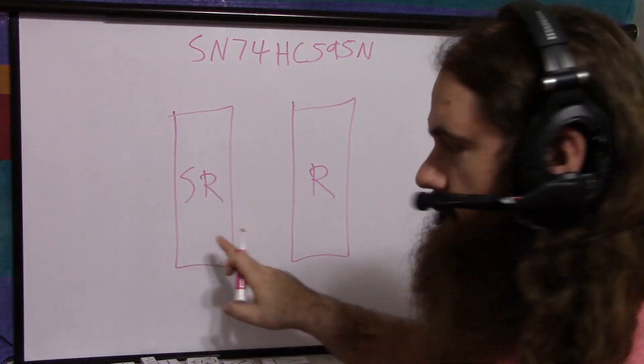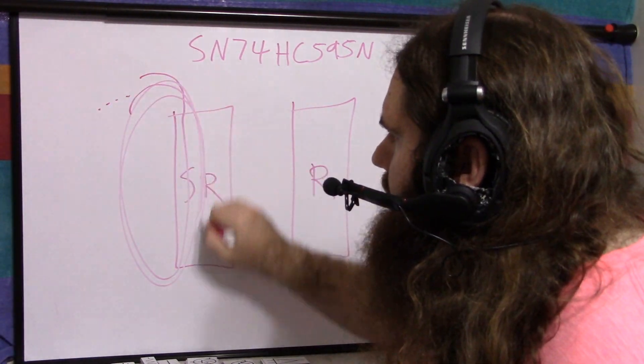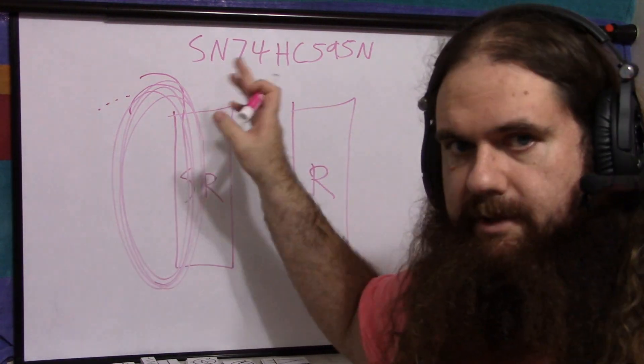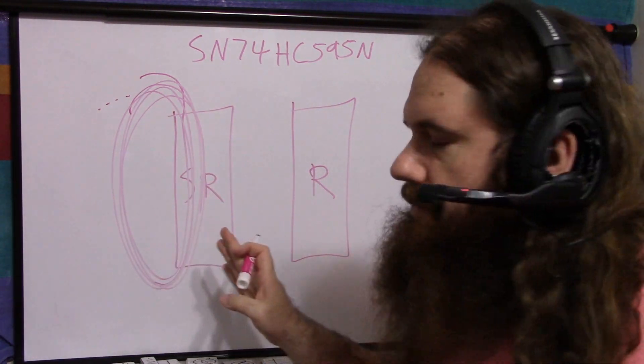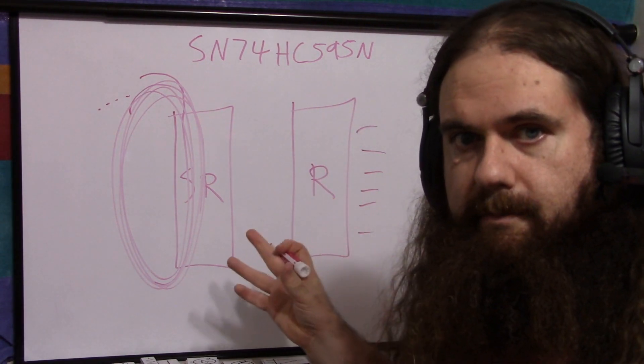It has a shift register and then a regular register. They call it a storage register in the datasheet. So you have your bits and you shift them through the shift register, and this is an 8-bit register and it's just any other shift register, but the actual outputs of the whole chip are not changing.